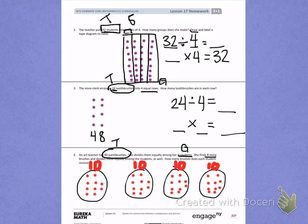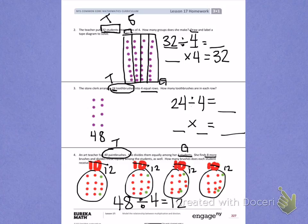If I look back at my problem, the art teacher finds 8 more brushes and divides those up also. So I'm going to add those 8 extra paintbrushes to my groups. [Counts 1 through 8, distributing among groups] If I look at my groups now, they don't have 10, but 12 paintbrushes each. So we had a total of 40 plus 8, which is actually 48 paintbrushes, that the teacher divided between 4 students, giving them each 12 paintbrushes.